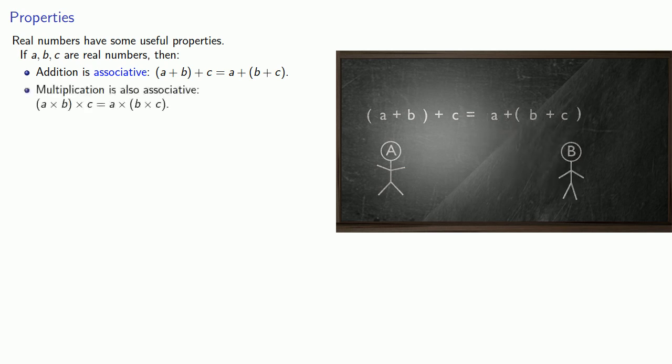Multiplication is also associative. If we multiply three things, a times b times c, we can multiply the first two things, a times b, first, or we can multiply the last two things, b times c, first, and we get the same result either way.